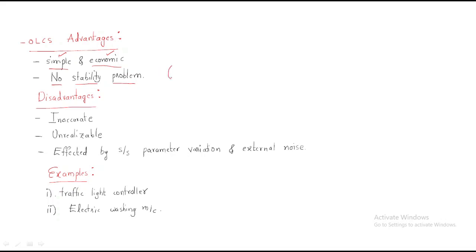The second advantage is no stability problem for the open-loop control system. Stability means the system will operate as a stable system and never be disturbed. Whenever the desired output is available, the stability problem does not occur. These are the advantages of the open-loop control system.